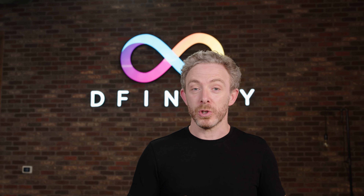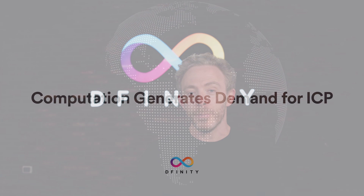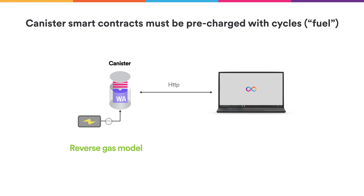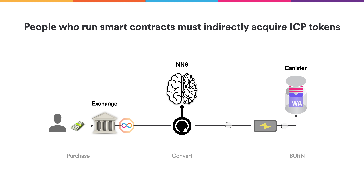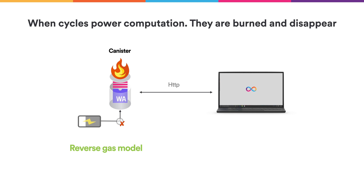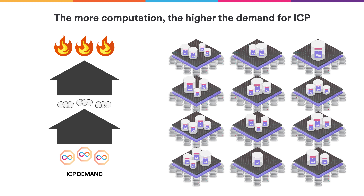The next question you probably have is what will generate demand for ICP? There are several aspects of the network that play this role. Firstly, computation generates demand for ICP. Canister smart contracts must be pre-charged with cycles which are used to fuel their computation — for example, when they are interacting with users over the web. This means that people who wish to run canister smart contracts must indirectly acquire ICP: somebody must buy ICP on an exchange, then use the network nervous system to convert those ICP into cycles, and finally charge their canisters with cycles which will burn them, powering computation. This creates a relatively predictable driver of demand — the more computation being performed on the network, the higher the demand for ICP.